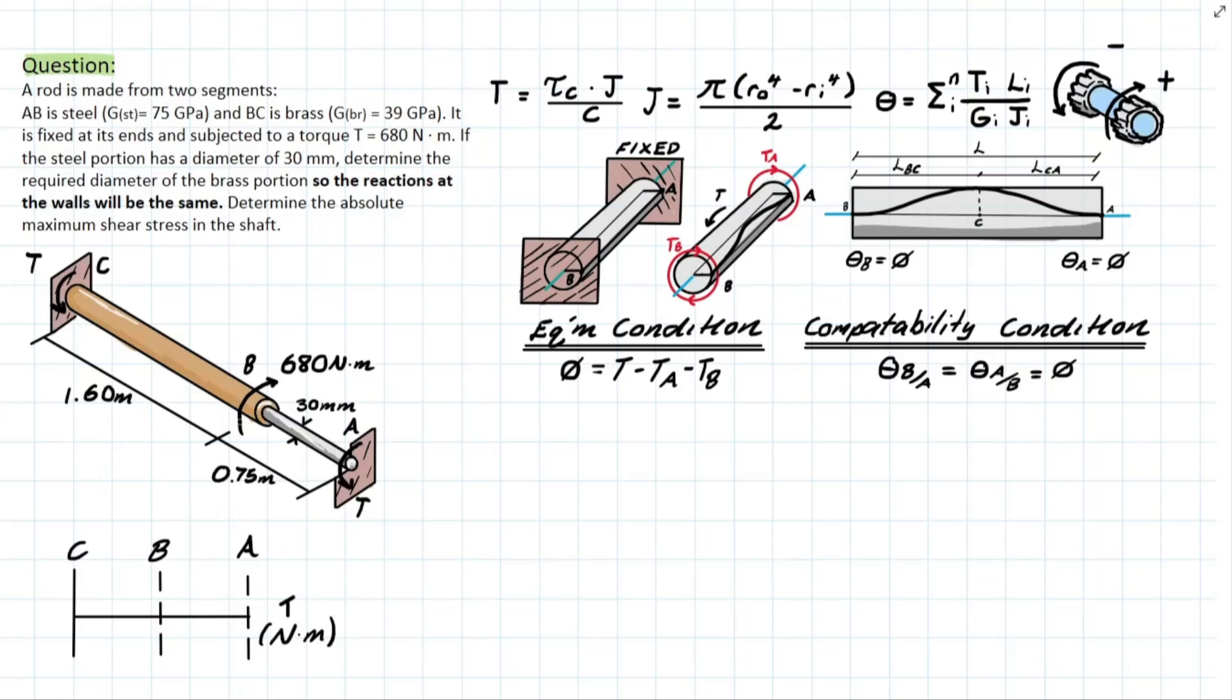So it's pretty much giving us a rod which is made up of two segments, and it's giving us an AB section which is made of steel, which has a specific shearing modulus of 75 GPa, and then we're looking at a brass section connected to that at point B which has a different shearing modulus of 39 GPa.